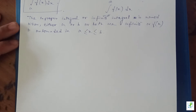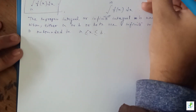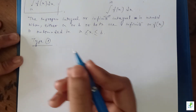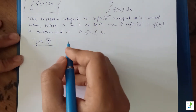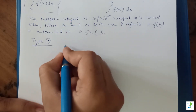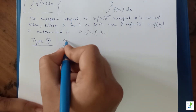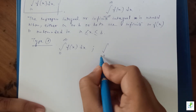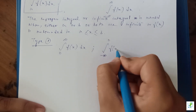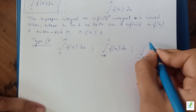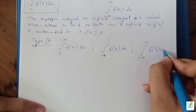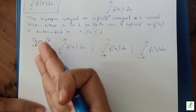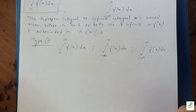Let's check out some examples of Type 1. In improper integrals of the first kind, there are three kinds of forms. The first form is integration from zero to infinity of f(x) dx. The second form is integration from minus infinity to zero of f(x) dx. The third form is integration from minus infinity to plus infinity of f(x) dx. If any of these three forms appear in your question, the integral is said to be an improper integral of the first kind.